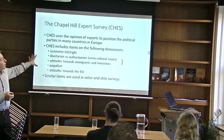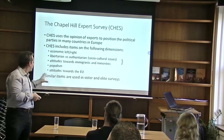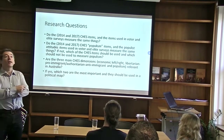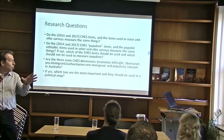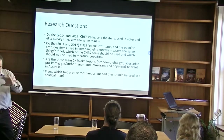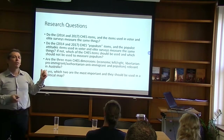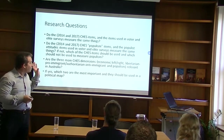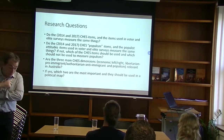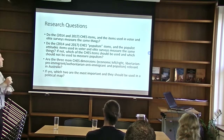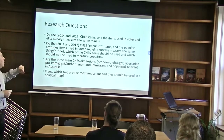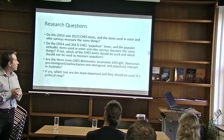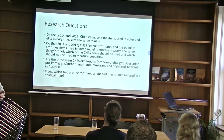The idea is that we have these dimensions measured by expert surveys, and we also have similar items used in voter and elite surveys. The main question someone would like to ask — especially scholars who combine these datasets to see congruence between parties and voters — is whether they measure similar things, and especially whether they measure similar things as far as populism is concerned. We are going to answer the first two questions through a pilot study conducted in Greece, because experts there are more familiar with questions used in the Chapel Hill Expert Survey, since it has been conducted for many years in Greece.